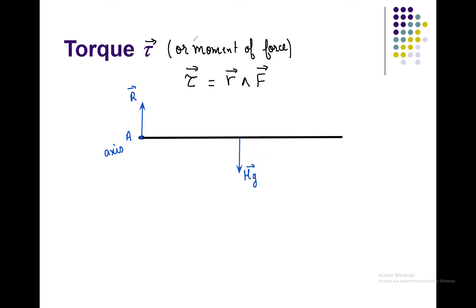To calculate tau, I first need to know the components of mg and r. I draw a line along the system — here we have one component of r and one component of mg. If we have a force F at an angle, you can split it into components. Before calculating tau, it's important to specify the pivot point.